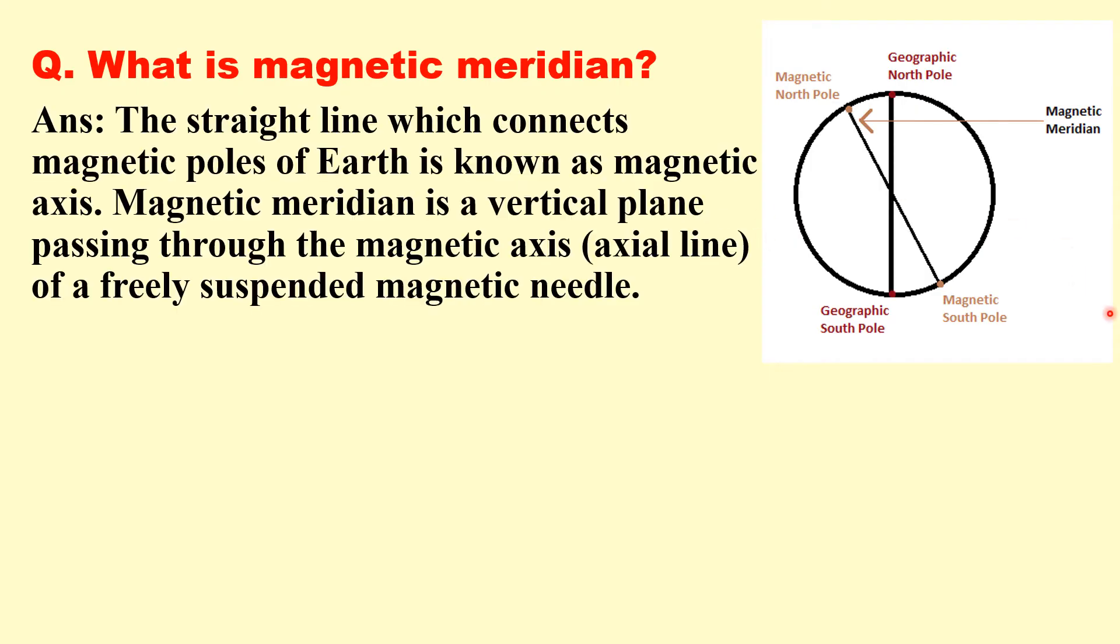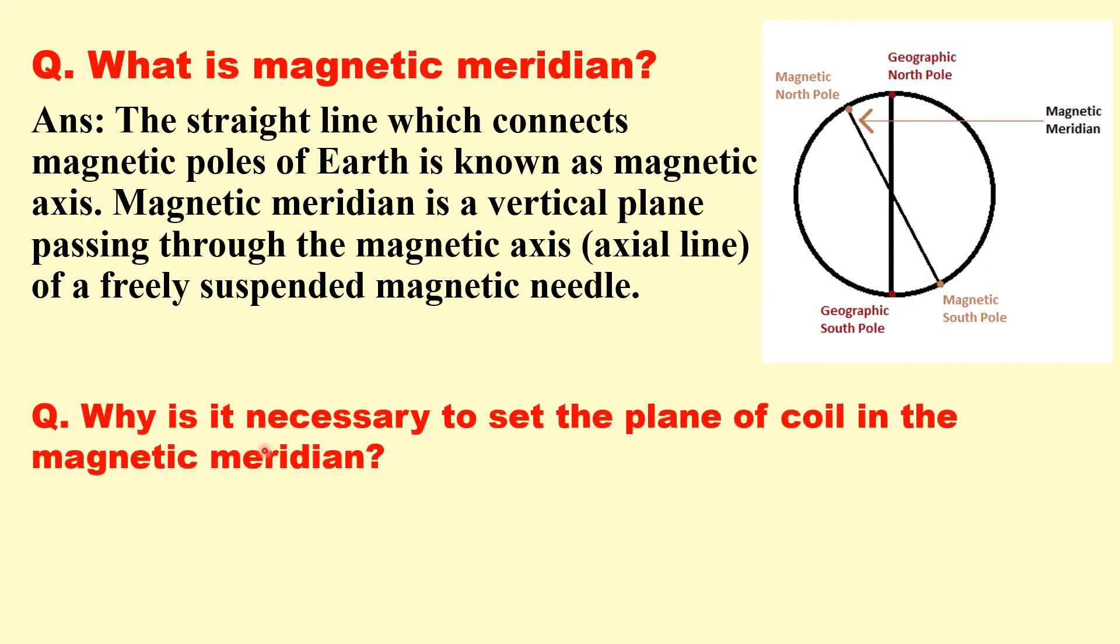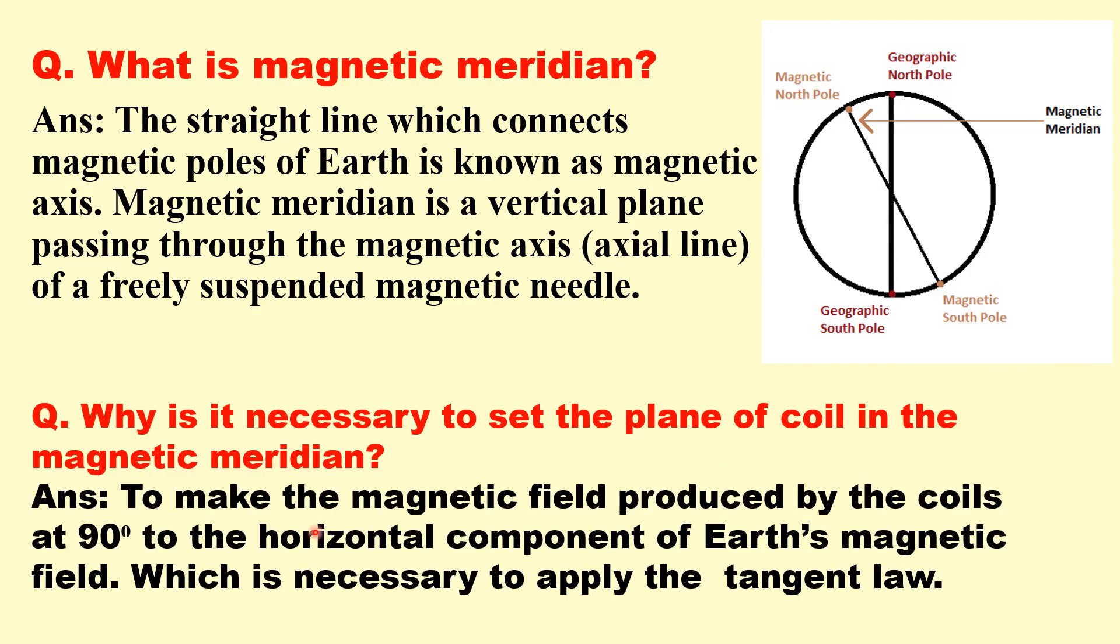Next question is what is magnetic meridian? We can see in this figure that geometrical north pole and geometrical south pole is different than magnetic north pole and magnetic south pole. The straight line which joins the magnetic north pole and magnetic south pole is known as the magnetic axis. Magnetic meridian is a vertical plane passing through this axis. Why is it necessary to set the plane of coil in the magnetic meridian? To make the magnetic field produced by the coil at 90 degrees to the horizontal component of earth's magnetic field. That is the necessary condition to apply the tangent law.